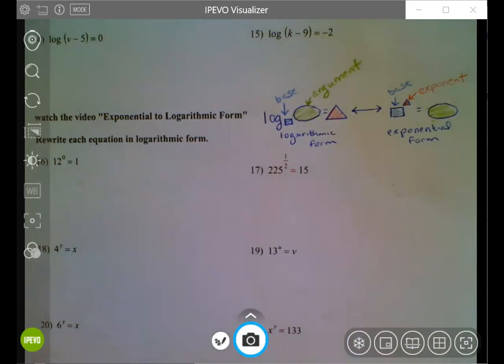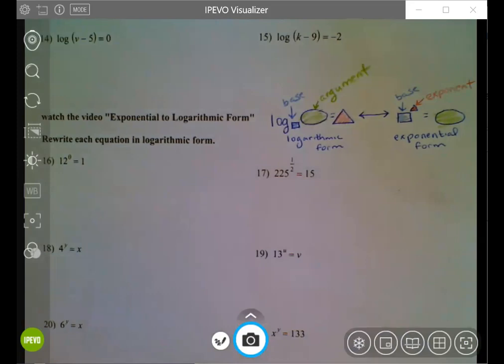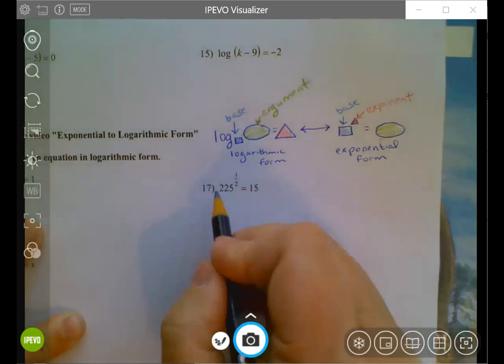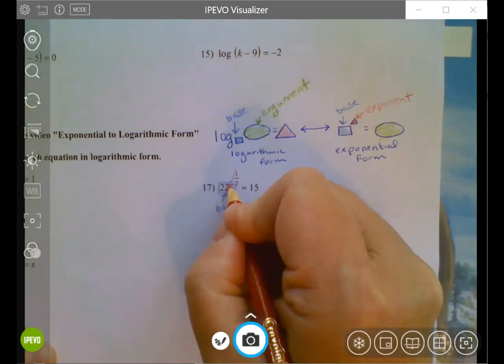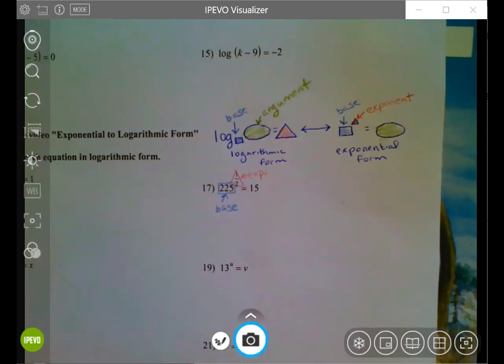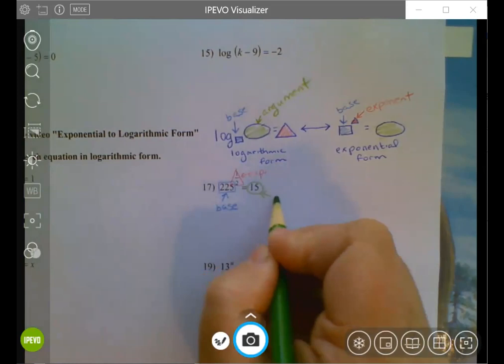So we have to look first at the exponential form, and I identify the parts. So let's look at number 17. My base is 225. My exponent is 1 half.